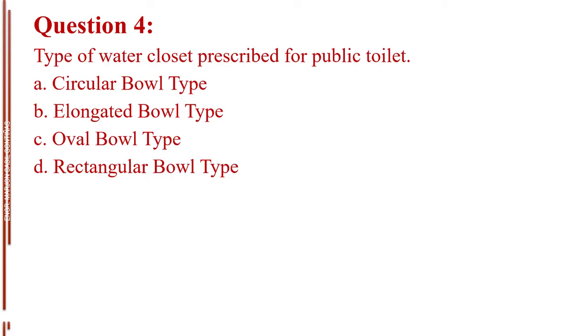Question number 4. Type of water closet prescribed for public toilet. Letter A, circular bowl type. Letter B, elongated bowl type. Letter C, oval bowl type. Letter D, rectangular bowl type. The answer is Letter B, elongated bowl type.